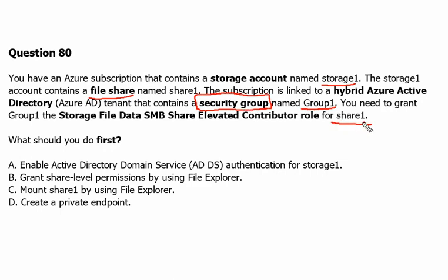So what should you do first? We need to understand that if we would like to grant any individual user or any group of Active Directory accounts access to a specific file share, we have to enable identity-based access. For that there would be certain steps to follow.